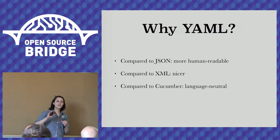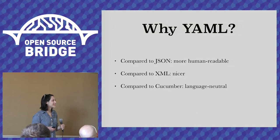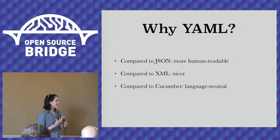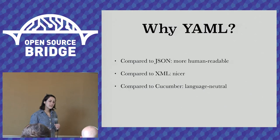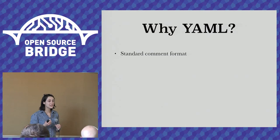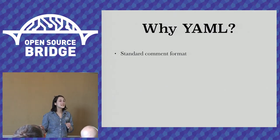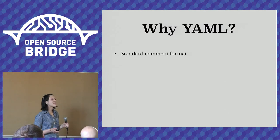There are two killer features that YAML offers. Compared to JSON it's more human readable; compared to XML it's just nicer; and compared to Cucumber, it didn't provoke this intense aesthetic reaction — it's more language-neutral, or at least based on a variety of languages in which more of our developers program, so the majority wins out. The first killer feature of YAML is that it offers a standard comment format. This might not seem like a big deal, but it is.